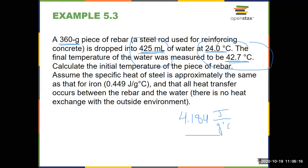We're given the specific heat of water, the mass of water, and the temperature change of water — so that allows us to calculate the heat that went into the water. We know heat is going into the water because the temperature is increasing. Q equals MC delta T. And if I know the heat transfer there, that's also equal to the heat lost by the metal. The only thing that might seem missing is the final temperature of the rebar — but it's the same 42.7 degrees Celsius, because they've reached thermal equilibrium. The final temperature of both substances is always the same.